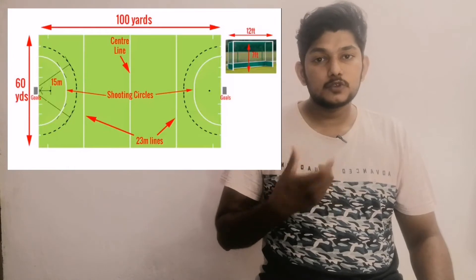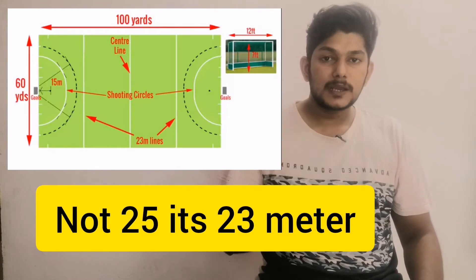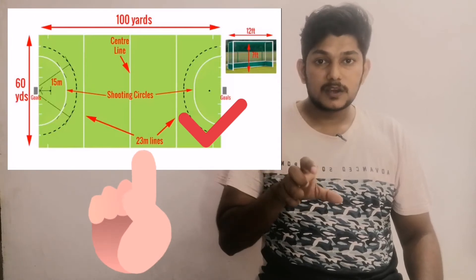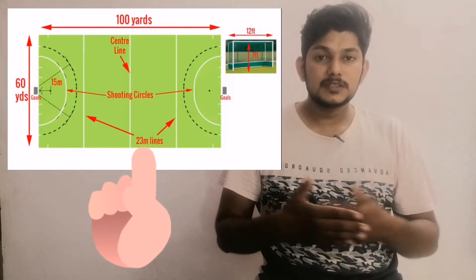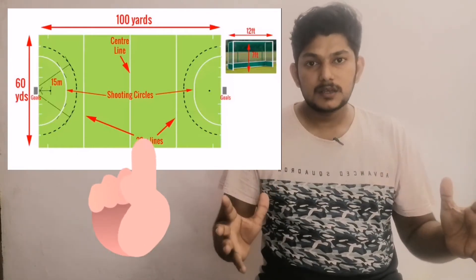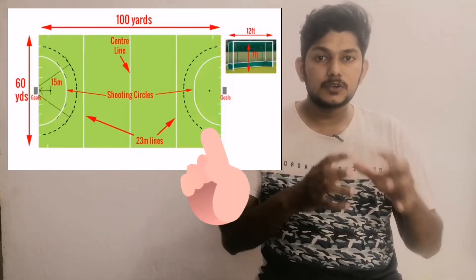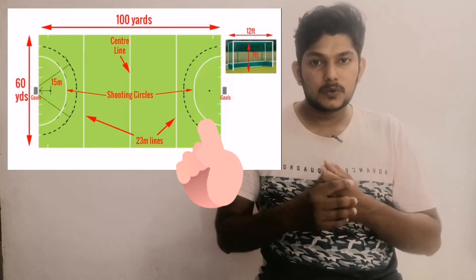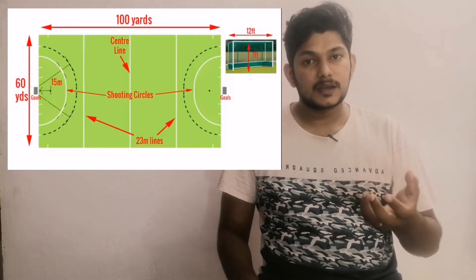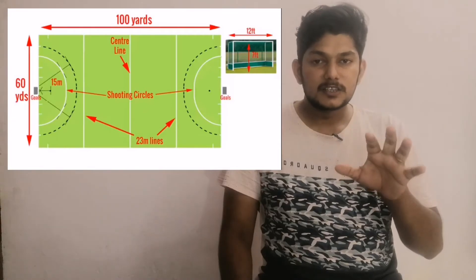A foul inside the shooting circle results in a penalty corner for the opposing team. If a player commits a foul for the team inside the shooting circle, the opposing team is awarded a penalty corner. You can see the dotted penalty line on the field.